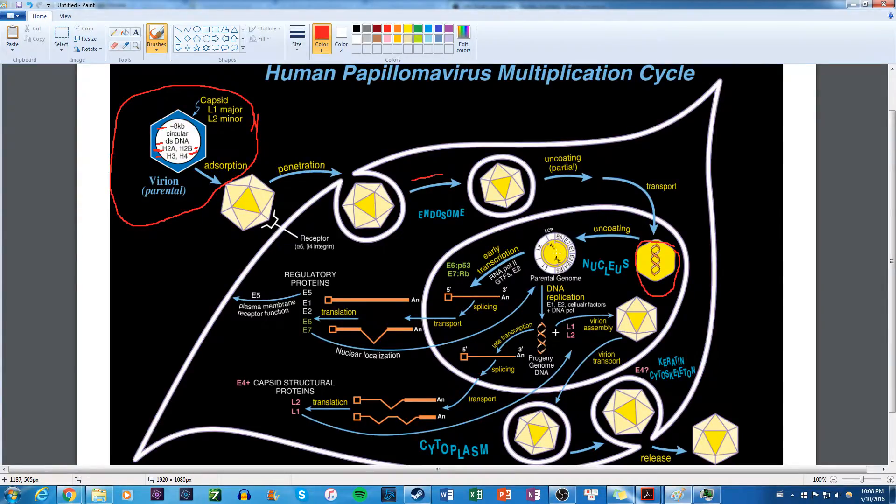You can see, similar to how polyomaviruses work, it has early genes that are expressed and late genes that are expressed. But instead of the expression being bi-directional, it is now unidirectional. So polyomaviruses have bi-directional expression with half the genome being expressed early and half being expressed late. However, this one, you have transcription happening in one direction only. And you have early and late transcription and translation.